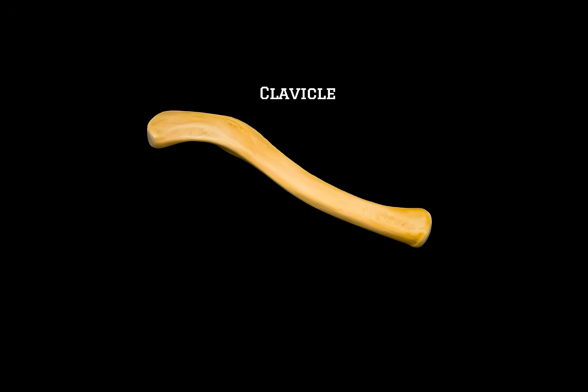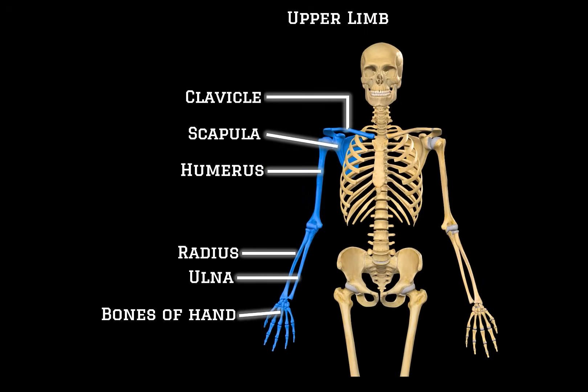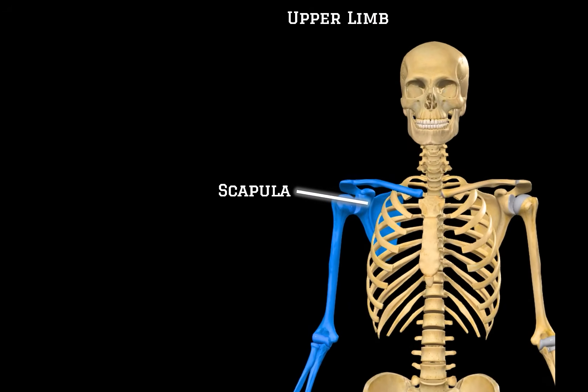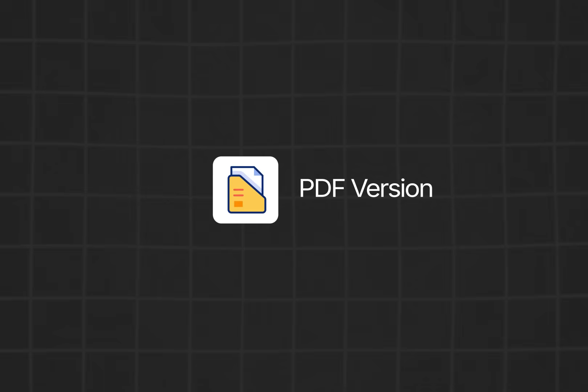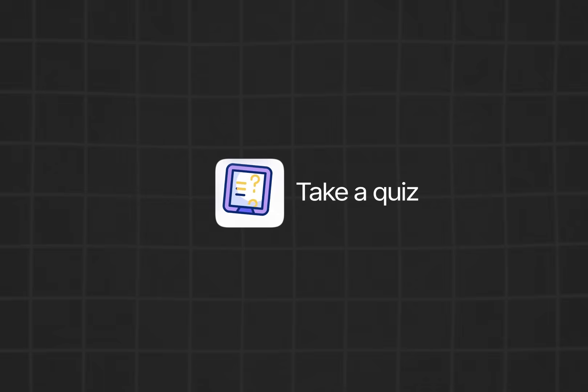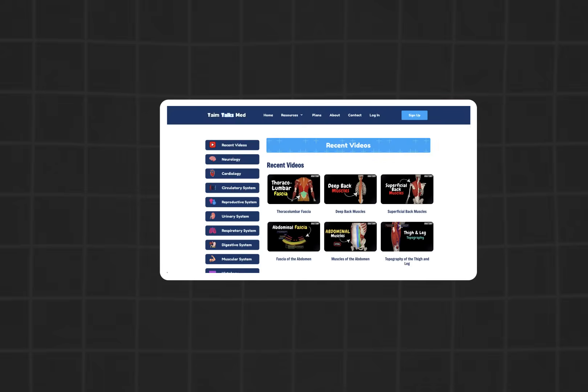So that was everything on the clavicle — a pretty interesting bone and also the most proximal bone of the upper limb. In the next video, we will be covering the whole anatomy of the scapula with some clinical notes as well. If you want a handmade PDF version of this lecture, take a quiz to test your knowledge, or access an organized list of all my videos, you can find everything on my website. Thanks for watching — see you in the next one.